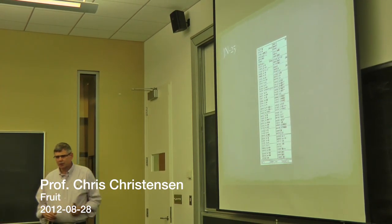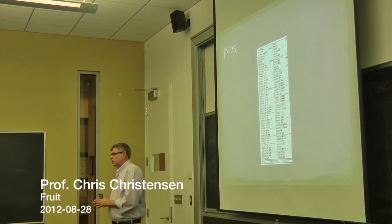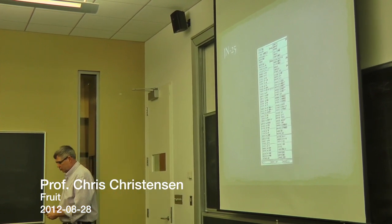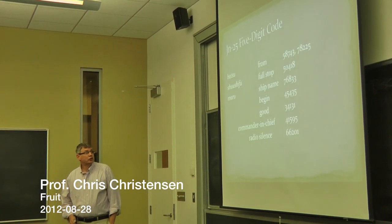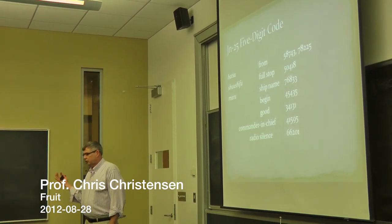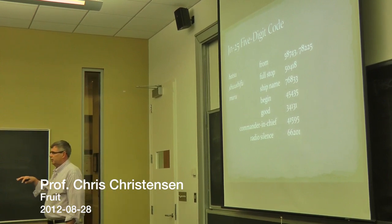I'll repeat a little bit of what I said yesterday. JN25 was the primary Japanese naval cipher during World War II. It's based upon a five-digit code. So common words and phrases in Japanese were replaced by five-digit numbers.